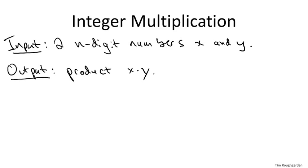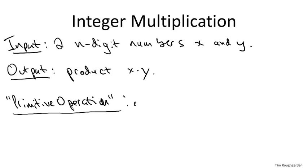I'll certainly be the first to admit that my handwriting is not the greatest — I got a C in penmanship back in elementary school, and I think the teacher was being a little generous. But you will get used to it. Back to integer multiplication: when we talk about procedures for multiplying two numbers, we're going to be interested in counting how many steps are required in order to execute the multiplication. For multiplying two numbers, let's just call a step the addition or multiplication of two single-digit numbers.